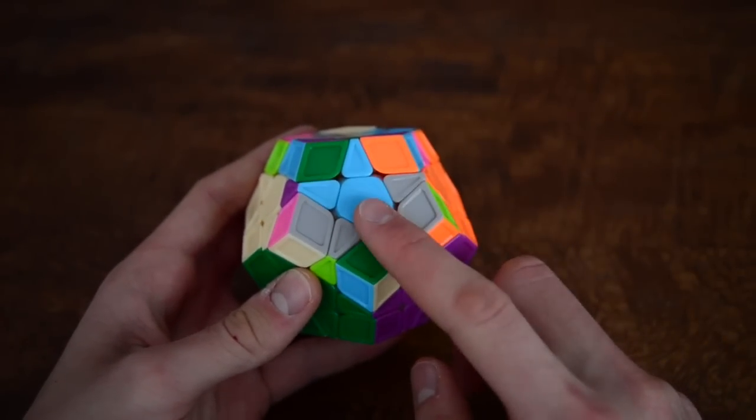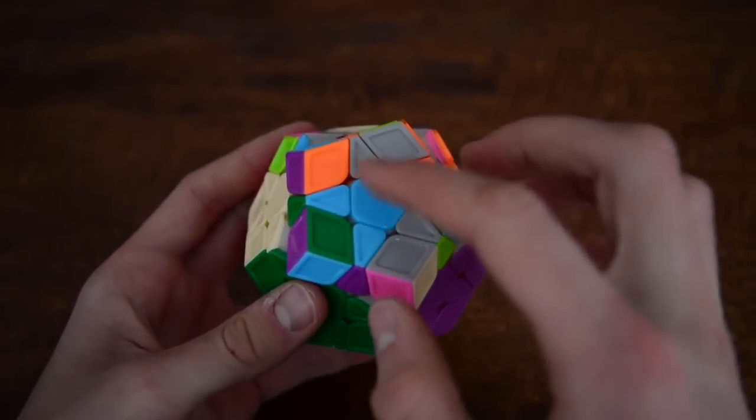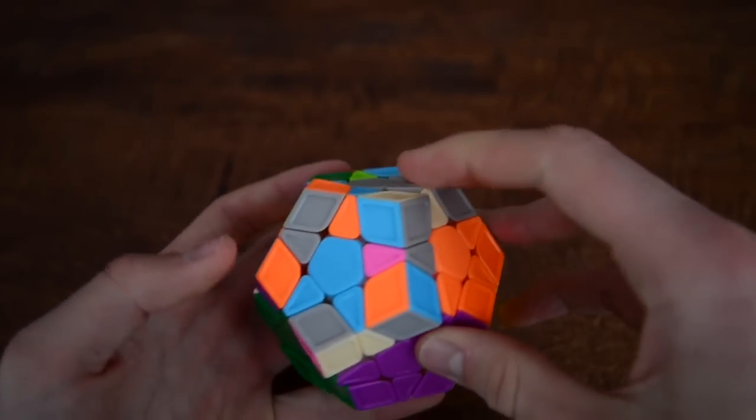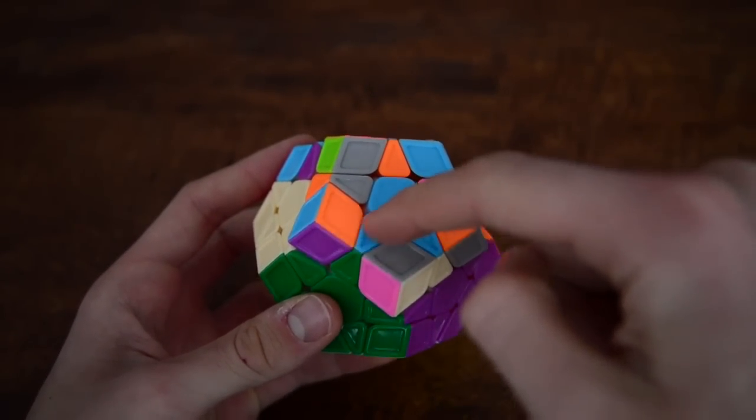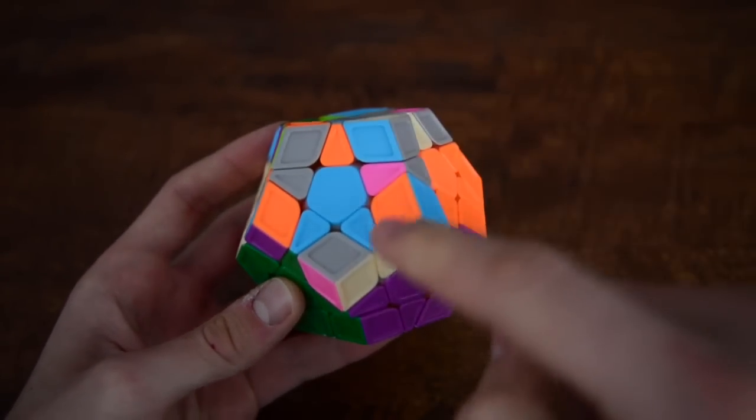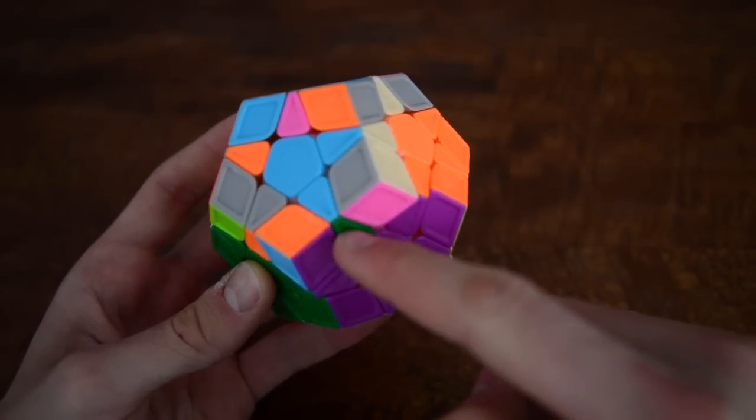Now I am at the last center which is the sky blue. Basically now I have to fill in one of the edges. It's quite a lucky case. So as you can see you just fill in one of the edges. Then you do an F prime or if you fill in this edge you have to do an F. And I usually do an F prime